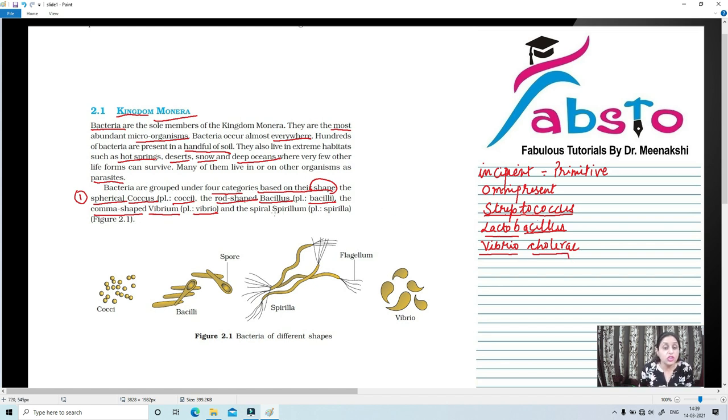And finally, the fourth shape or fourth group depending upon the shape is spirillum bacteria, plural is spirilla and the shape is spiral. And the example is spirochete. So, the example of spiral bacteria is spirochete. Now, as you can see in figure 2.1, these different shapes are shown here. Cocci are spherical in shape, bacilli are rod-like in structure, spirillum are spiral in structure and they have flagellum at both the ends. And finally, vibrio are comma-shaped.